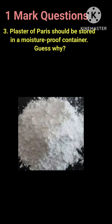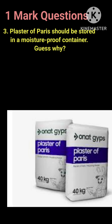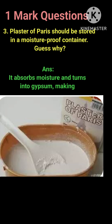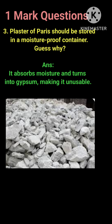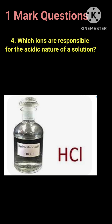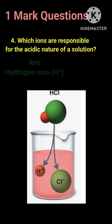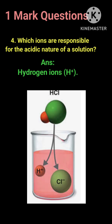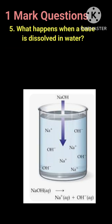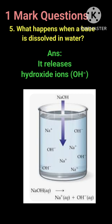Question 3: Plaster of Paris should be stored in a moisture-proof container — guess why? Answer: It absorbs moisture and turns into gypsum, making it unusable. Question 4: Which ions are responsible for the acidic nature of a solution? Answer: Hydrogen ions (H⁺). Question 5: What happens when a base is dissolved in water? Answer: It releases hydroxide ions (OH⁻).